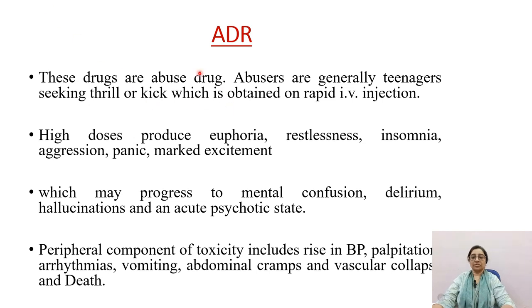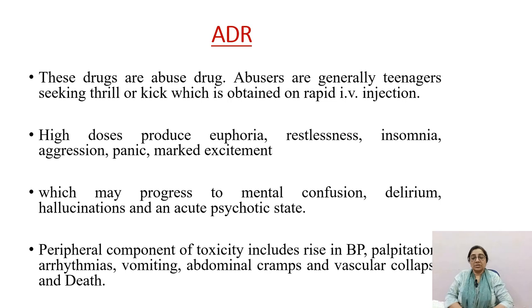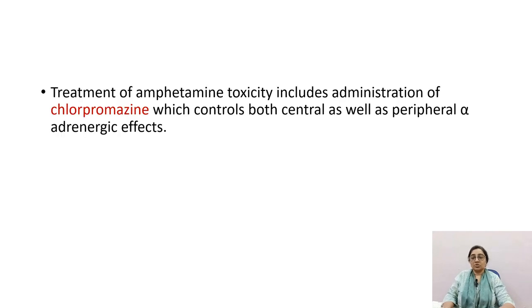Abuse and toxicity of amphetamine: abusers are generally teenagers seeking a high. Rapid IV injection of high doses produces euphoria, restlessness, insomnia, aggression, panic attacks, marked excitement progressing to mental confusion, delirium, hallucinations, and acute psychotic state. Peripheral toxicity includes rise in blood pressure, palpitations, arrhythmia, vomiting, abdominal cramps, and vascular collapse, ultimately causing death. Treatment of amphetamine toxicity includes administration of chlorpromazine, an antipsychotic drug with both central and peripheral alpha-adrenergic blocking effects.